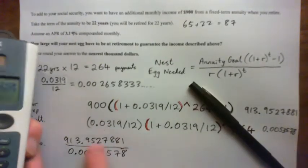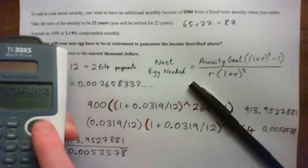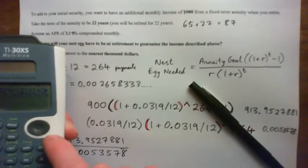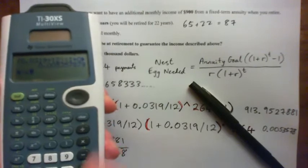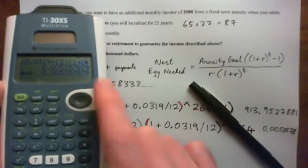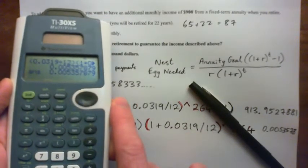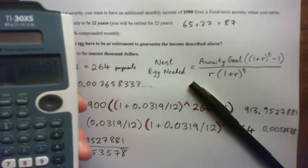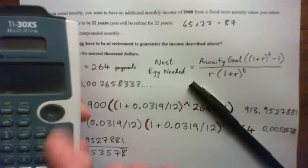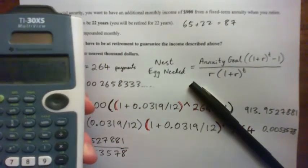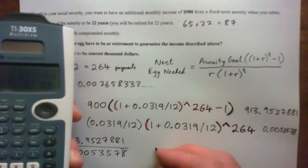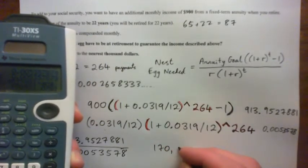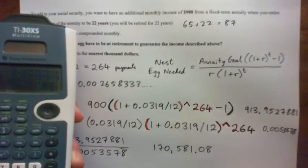What I'm going to do is I'm going to type this number and then divide by ans, because that's contained in ans. So, if I go 2nd ans, that's the new answer now. Contained in answer is the 0.005 number. So I'm just going to type in 913.9527881 and divide that by 2nd ans. And there's my answer. 170,581.08.